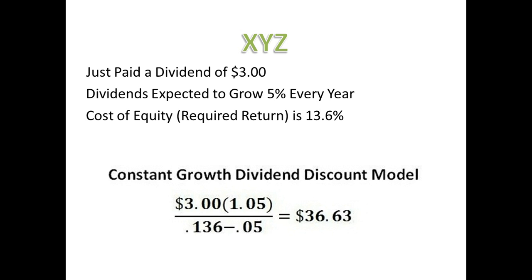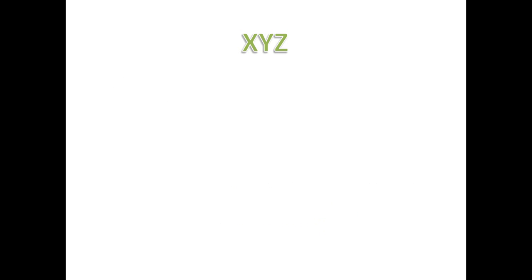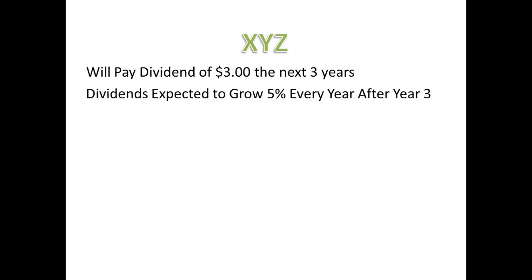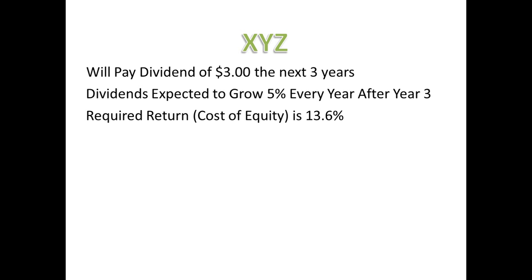When valuing a stock, you can mix the Dividend Discount Model with the Constant Growth Dividend Discount Model. For example, let's assume that XYZ is going to pay a fixed dividend of $3 for the next three years, and after the third year, XYZ's dividend is expected to grow by 5%. The required rate of return is still 13.6% and the risk-free rate is still 4%. How would we find the intrinsic value of XYZ's stock today?